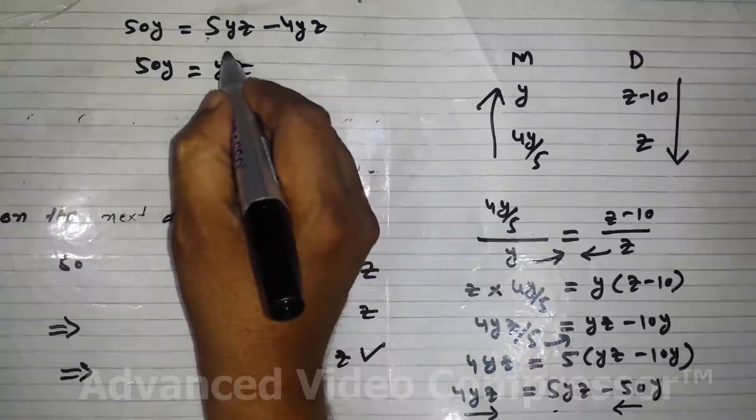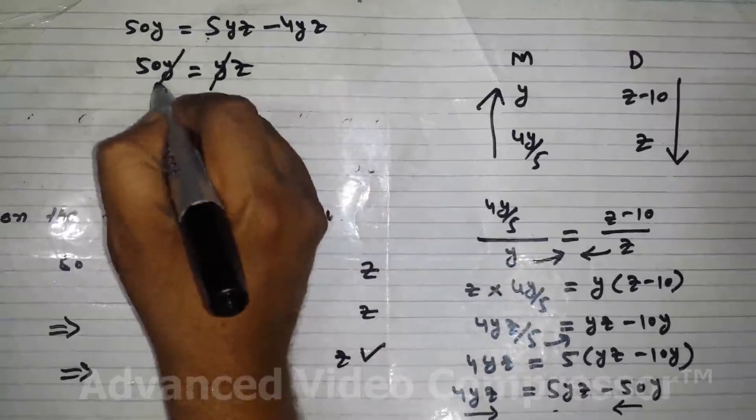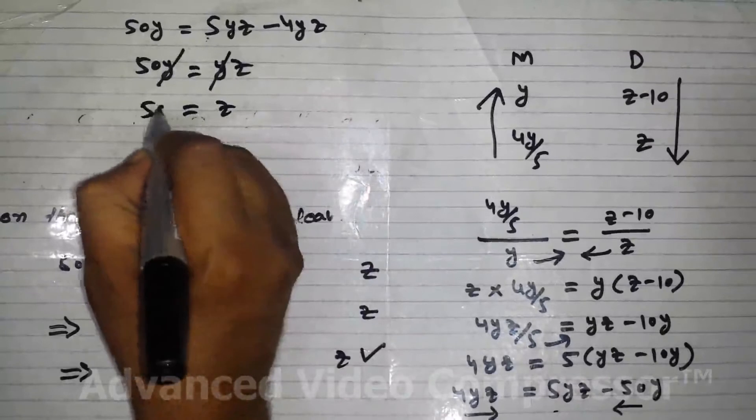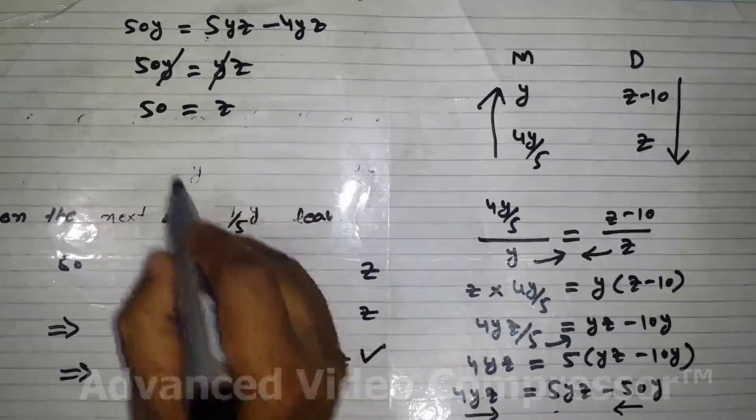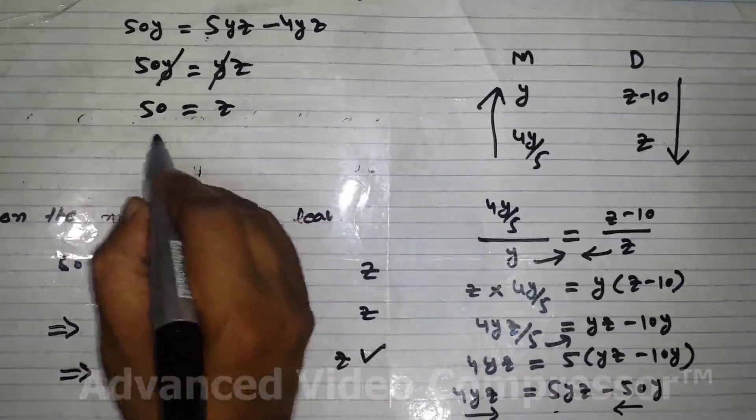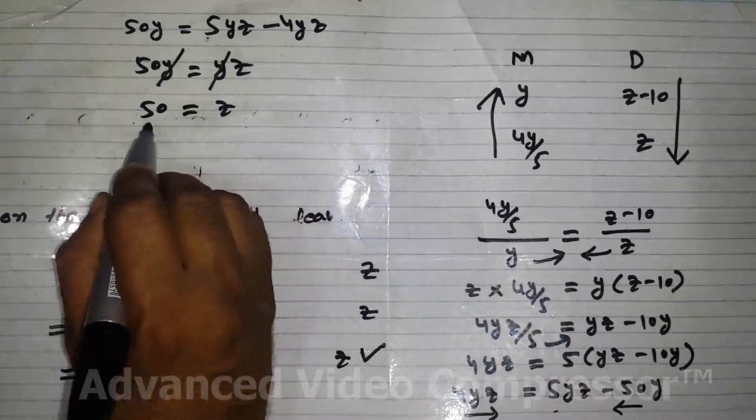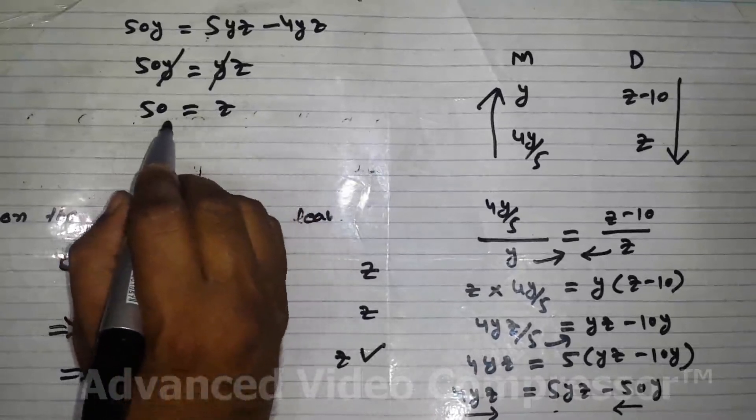We can cancel this Y with this Y. So Z is equal to 50. We found that the number of days initially was equal to 50 days. So we found that the provision was sufficient for 50 days.